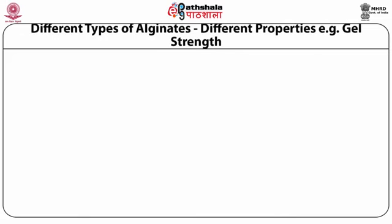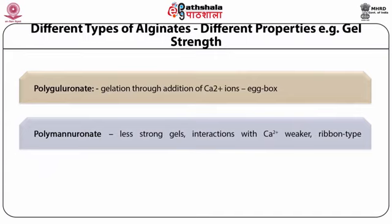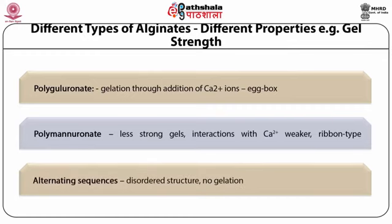Different types of alginates have different properties. Poly-glucuronate gels through addition of calcium²⁺ ions (egg-box model), producing stronger gels. Poly-mannuronate forms less strong gels with weaker ribbon-type conformations. Alternating sequences give disordered, non-gelling structures. Applications of alginates include high water absorption, low viscosity emulsifiers, shear-thinning thickeners, stabilizers for phase separation in low-fat substitutes, pet food chunks, onion rings, wound healing agents, and the printing industry.